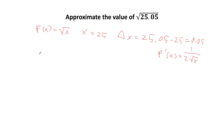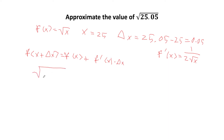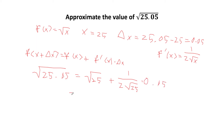Recalling the differential formula f(x + Δx) ≈ f(x) + f'(x)·Δx, we plug in: √25.05 ≈ √25 + [1 / (2√25)] × 0.05, which equals 5 + (1/10) × 0.05, giving us 5.005.